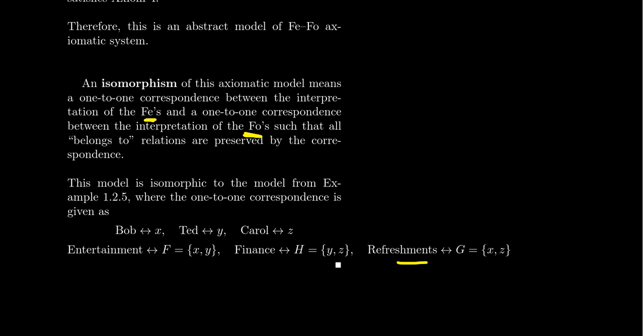And so this is a one-to-one correspondence that preserves all the relationships here. So there's this one-to-one correspondence between the fees. There's this correspondence between the foes. And then the other thing here is the belonging. That's a relation.